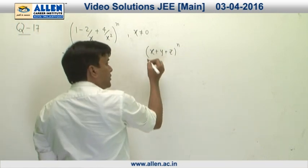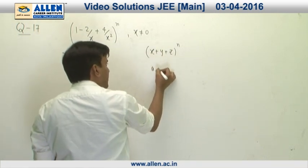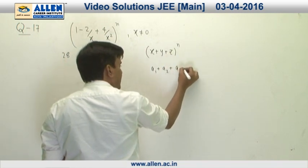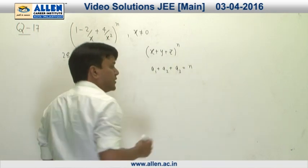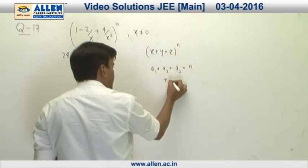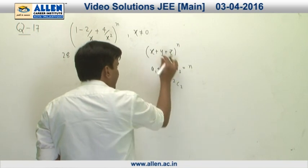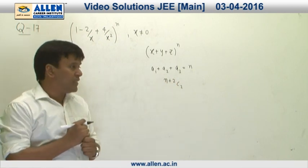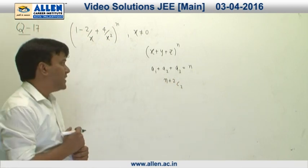In the terms of this expansion, the sum of the powers of X and Y and Z is always going to be N. If the power of X is A1, Y is A2, and Z is A3, that is equivalent to N. So N we have to distribute among these three. This is going to be N plus 2C2. The total number of dissimilar terms is going to be N plus 2C2.